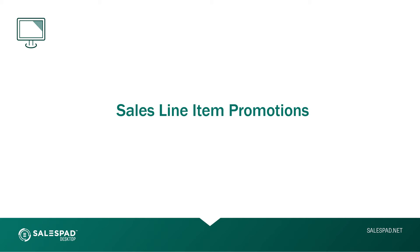Let's move on to Sales Line Item Promotions. This is a tool we've added to allow you to offer a promo specific to a certain item — think of a buy X, get Y scenario. In today's demonstration, I'm going to use a caster wheel item where if the customer buys three, they get the fourth free. As I add the line item to the sales document, SalesPad will recognize that there is an existing promo for that item, prompt the CSR or inside sales rep with the details of that promo, and provide a dockable view from the sales line to show all of the different promotions.